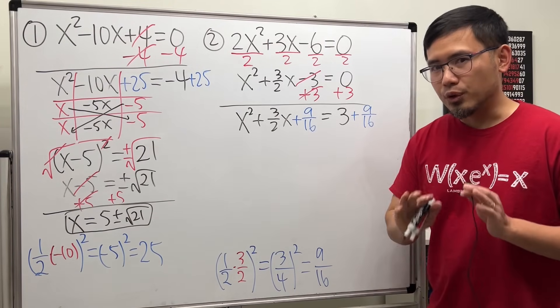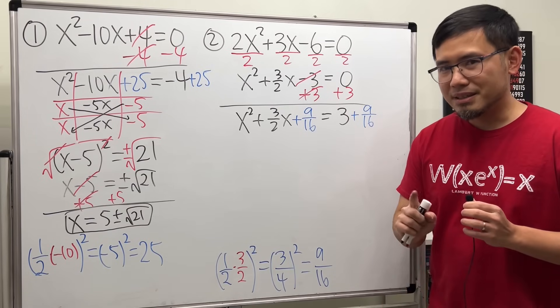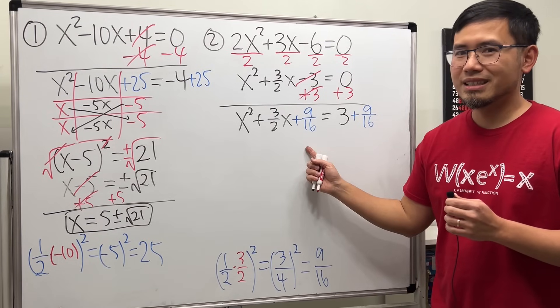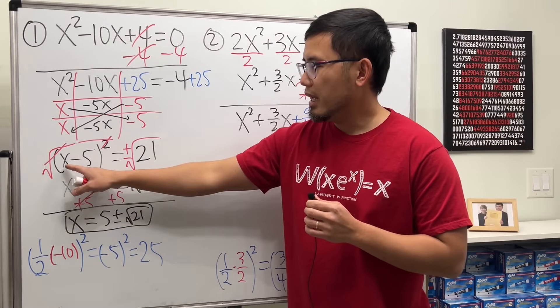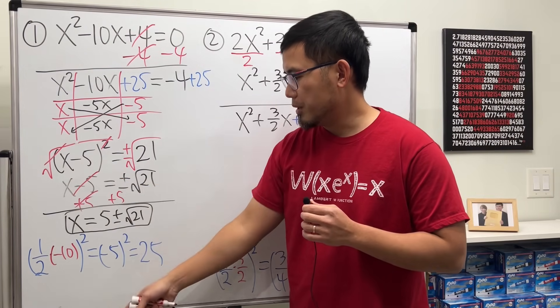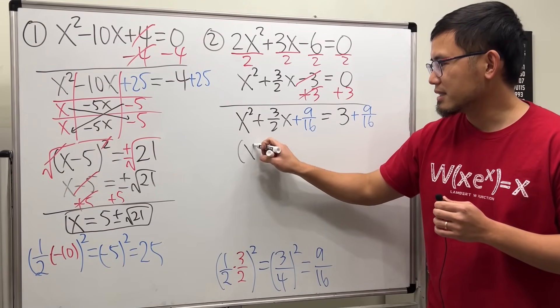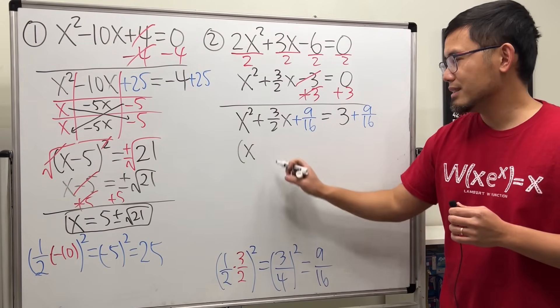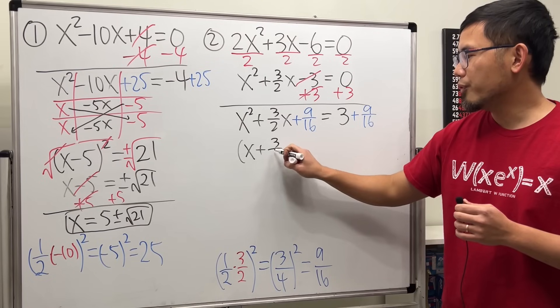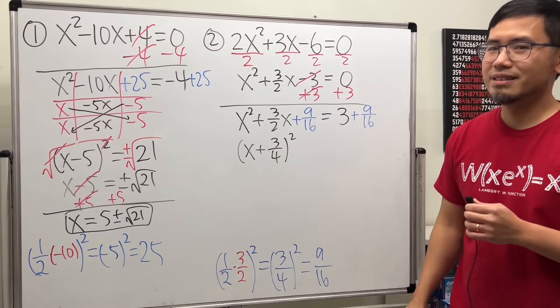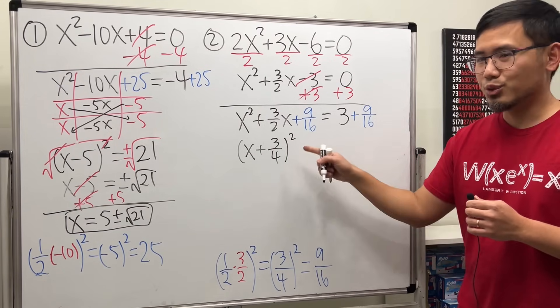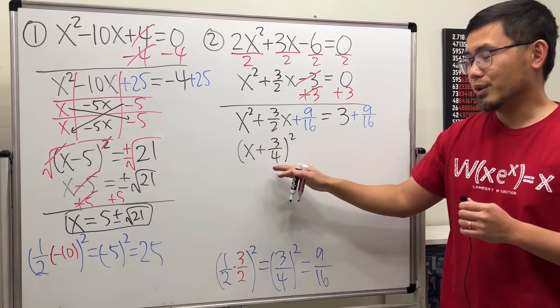Okay, on the left-hand side, for sure you can factor it. Better yet, you can even do the shortcut. Remember, it's going to be x, and this number will be from here. So, if you do the shortcut, you get x, and then plus 3 over 4 squared. It does work, right? You can try the tic-tac-toe with fractions, or just do a shortcut.